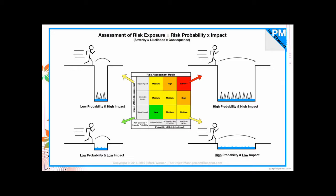First, low probability with high impact: the situation is unlikely to occur, but the consequences are dire. Using Super Mario as an analogy — falling down is unlikely, but if you do fall, it can be deadly. That's a low probability but high impact risk. For low probability with low impact, the event is unlikely to happen, and if it does, the consequences are not severe. Even if you fall down, it's just shallow water — you will survive. That's considered a low risk.